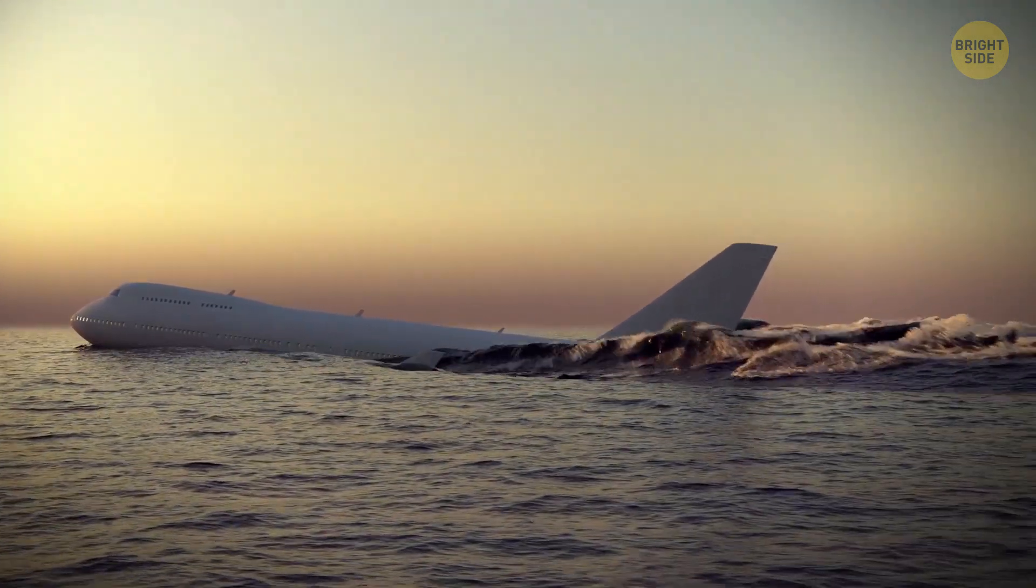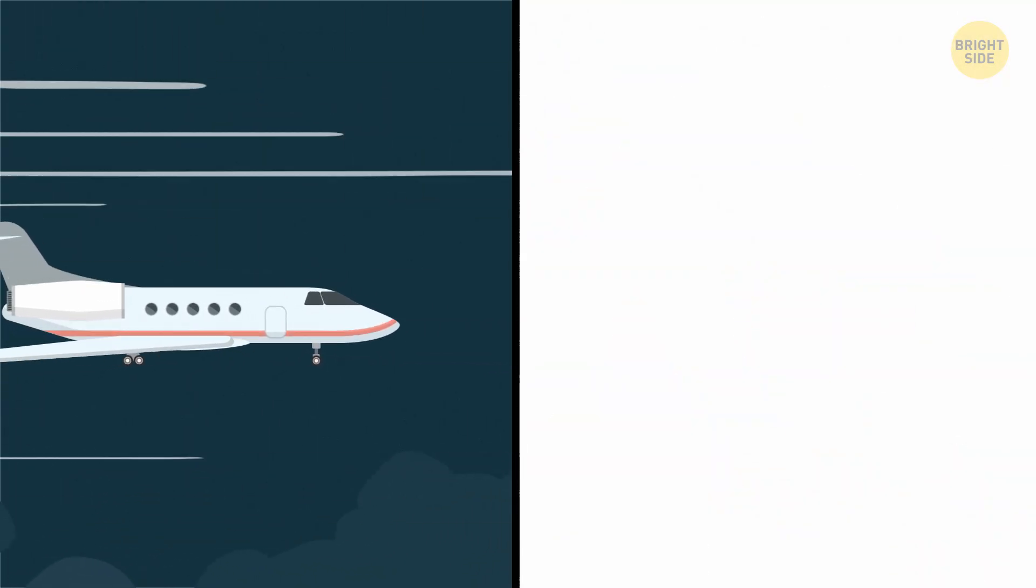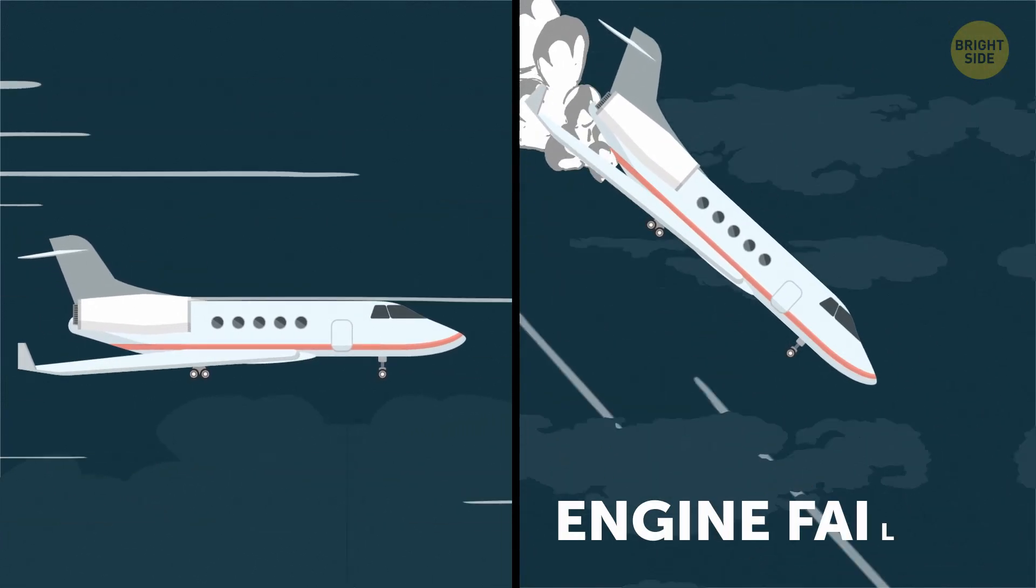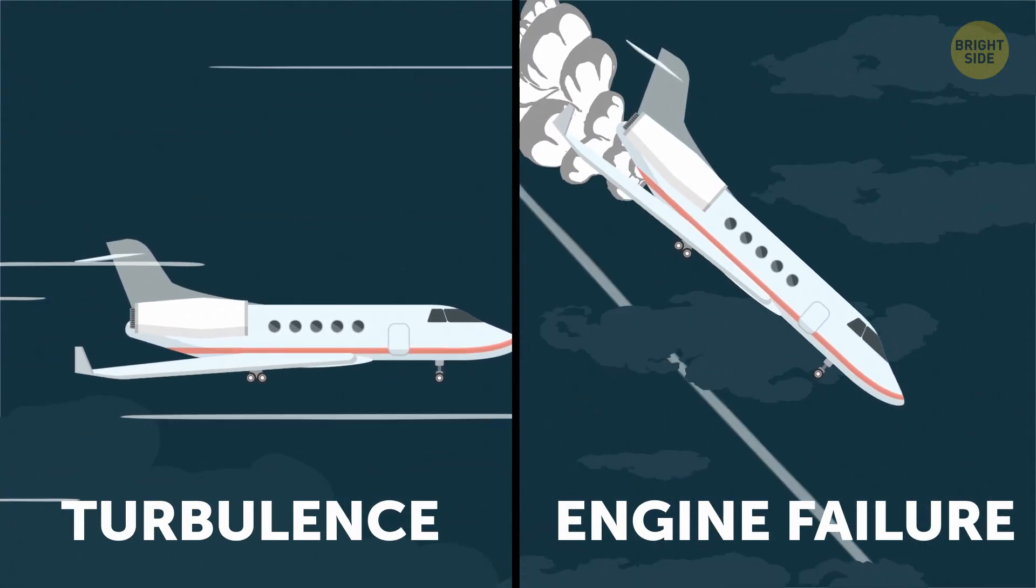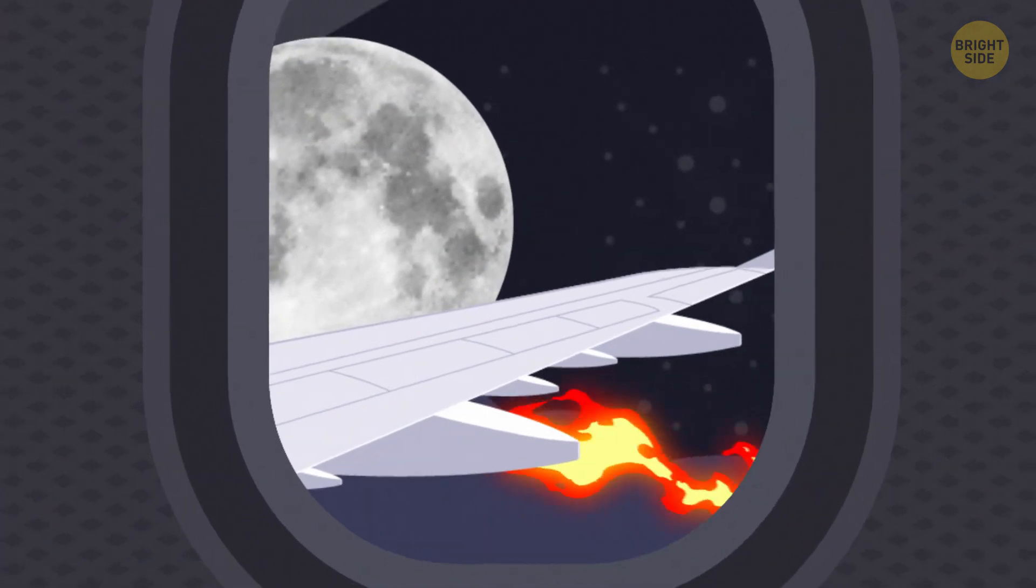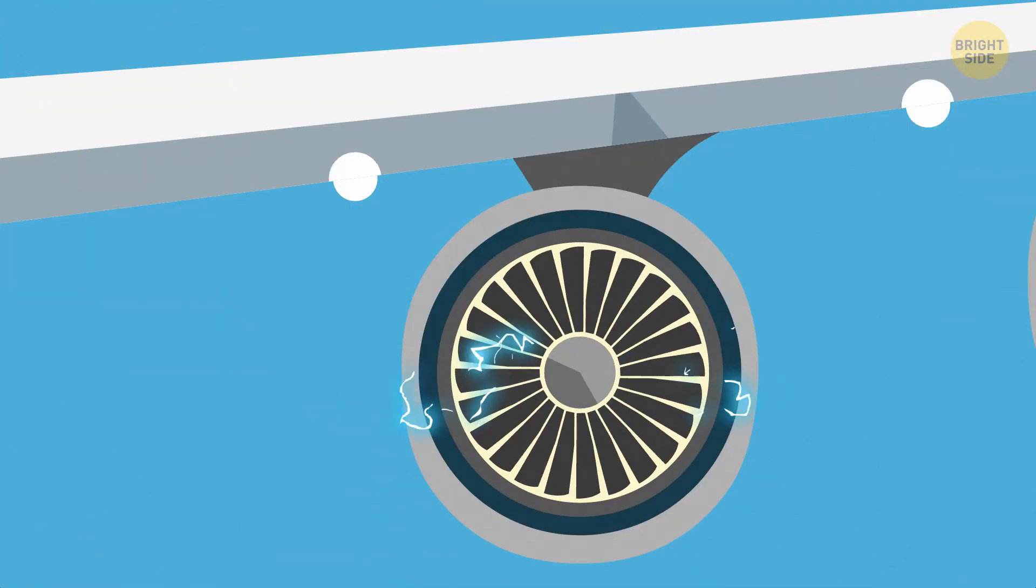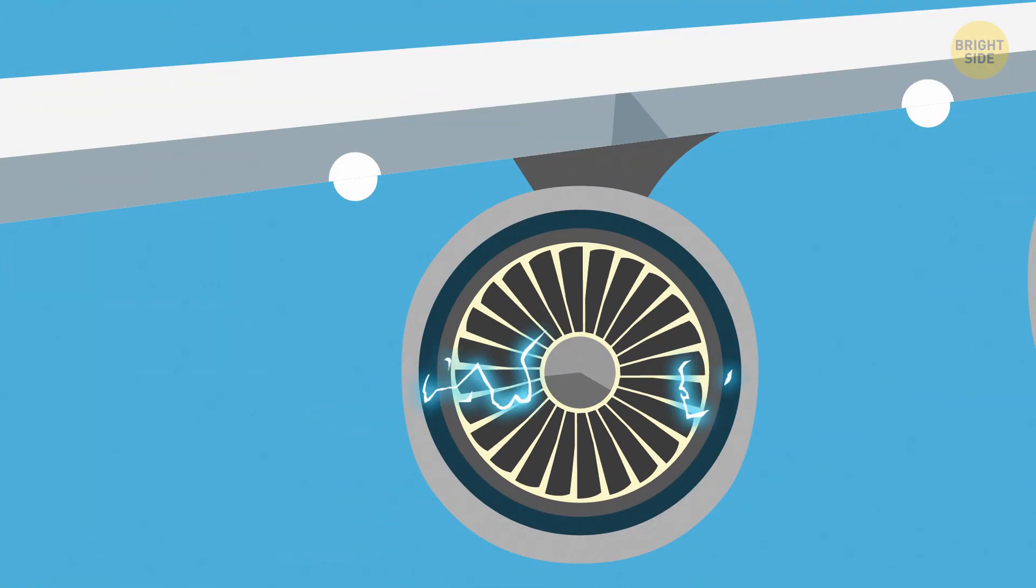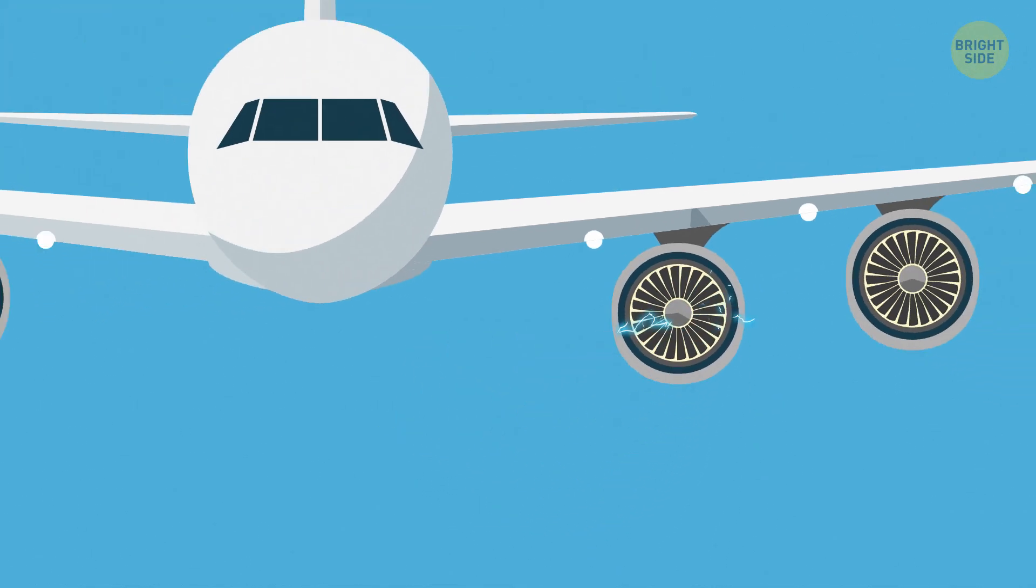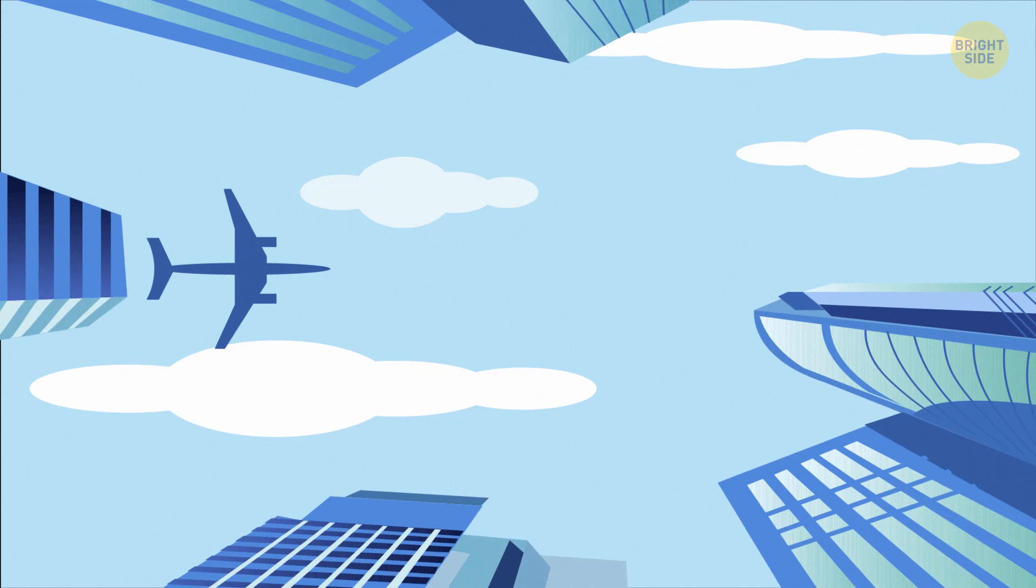The two most common fears that passengers have on board the plane are engine failure and turbulence. Let's see if there's actually anything to be afraid of. Many people think that if an engine breaks down, the plane will plummet to Earth. The truth is that the engines aren't exactly what keeps the plane going. The name itself, airplane, hints at its ability to glide through the air.